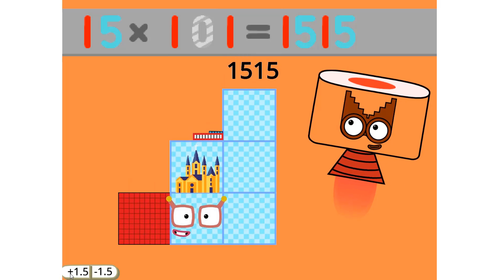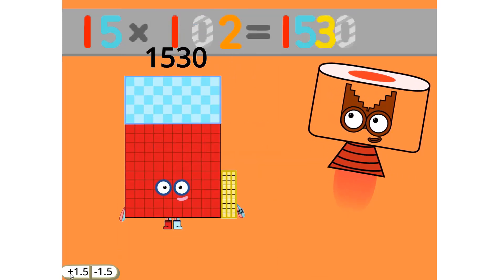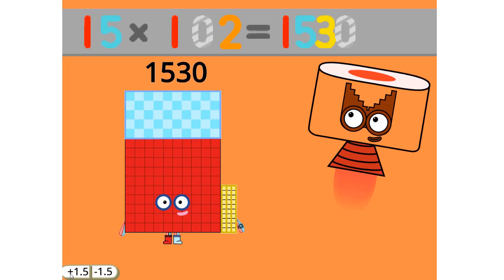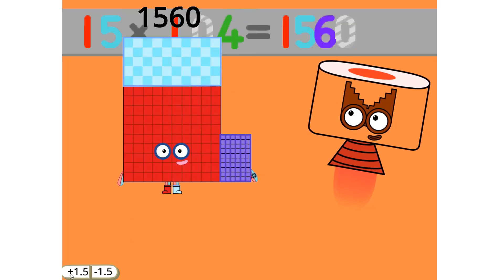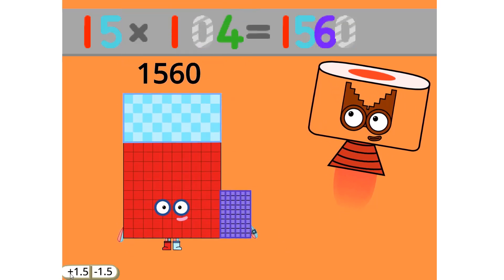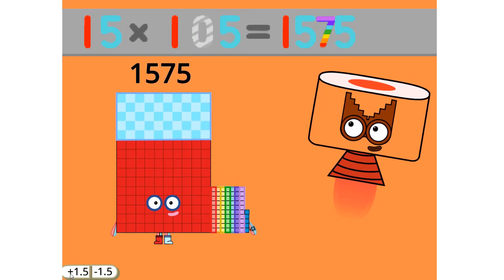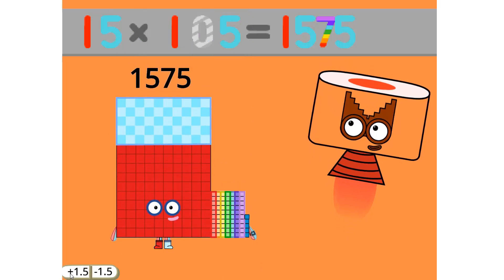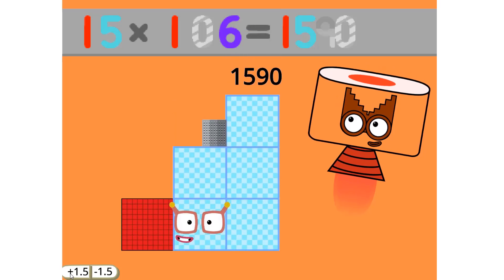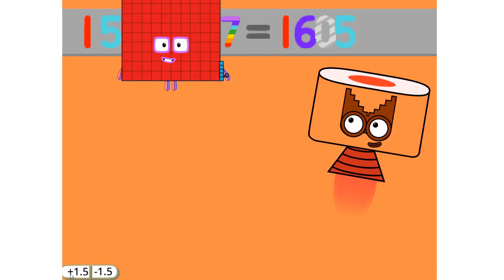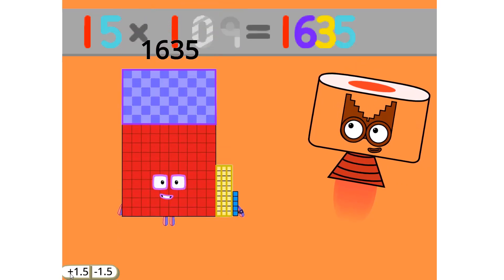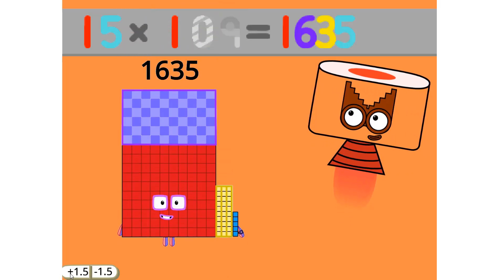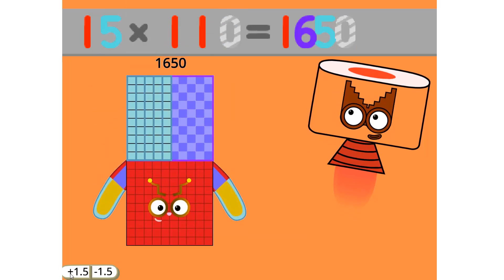15 times 101 equals 1515. 15 times 102 equals 1530. 15 times 103 equals 1545. 15 times 104 equals 1560. 15 times 105 equals 1575. 15 times 106 equals 1590. 15 times 107 equals 1605. 15 times 108 equals 1620. 15 times 109 equals 1635.